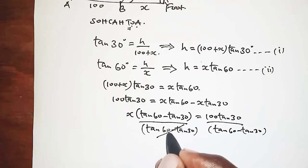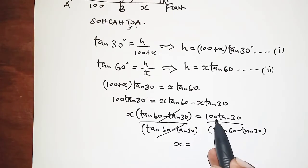So this and that will cancel, so X will end up as 100 tan 30° divided by (tan 60° - tan 30°), which will give us 50.